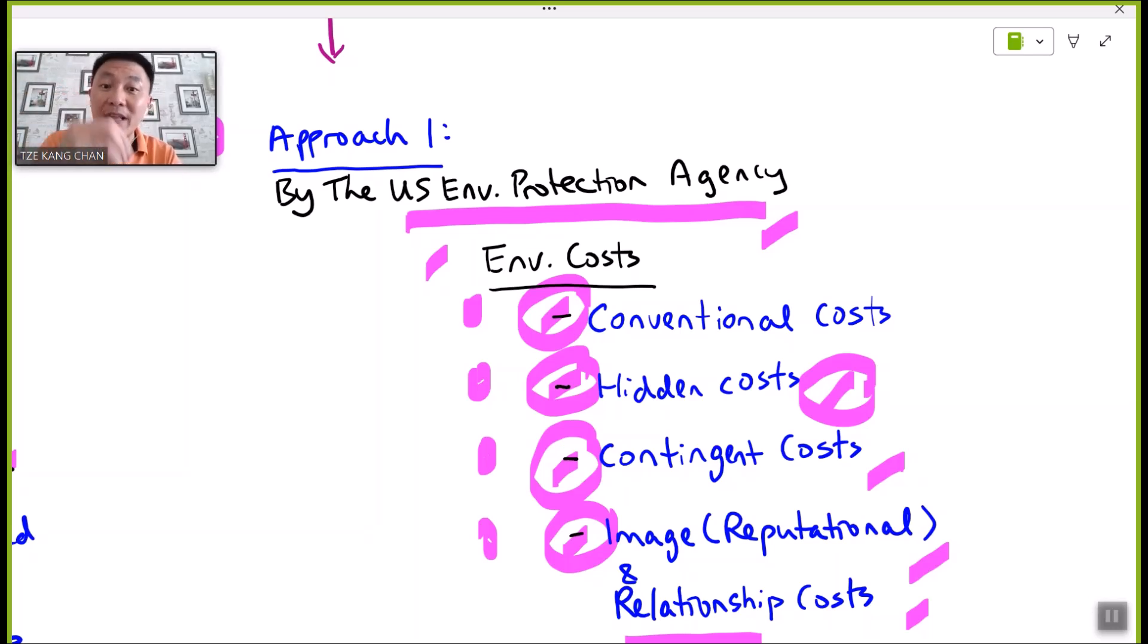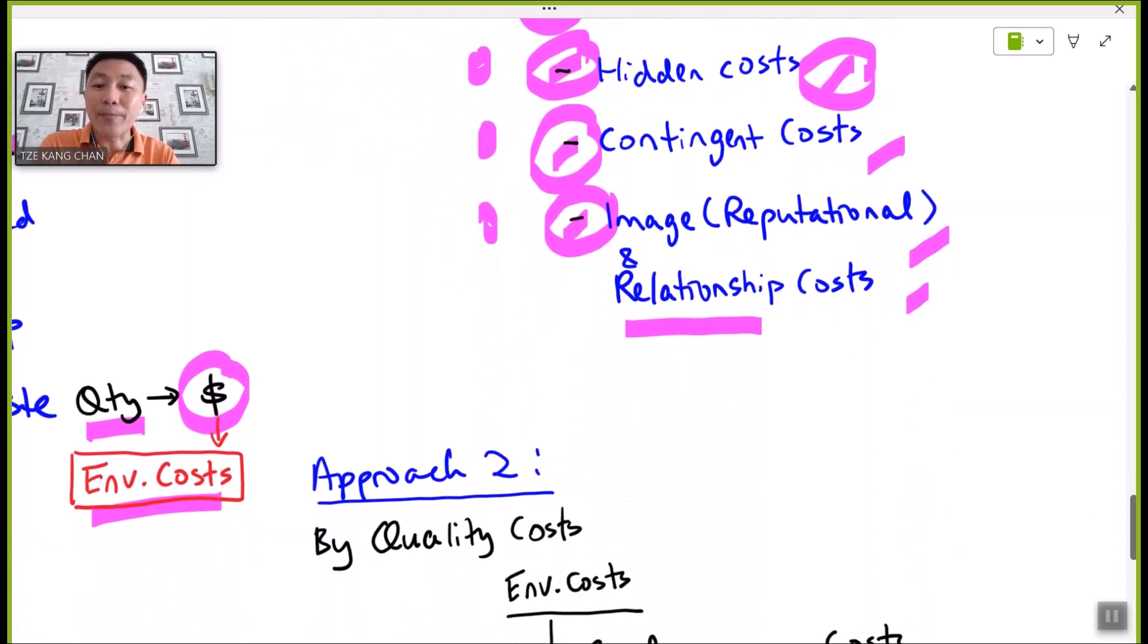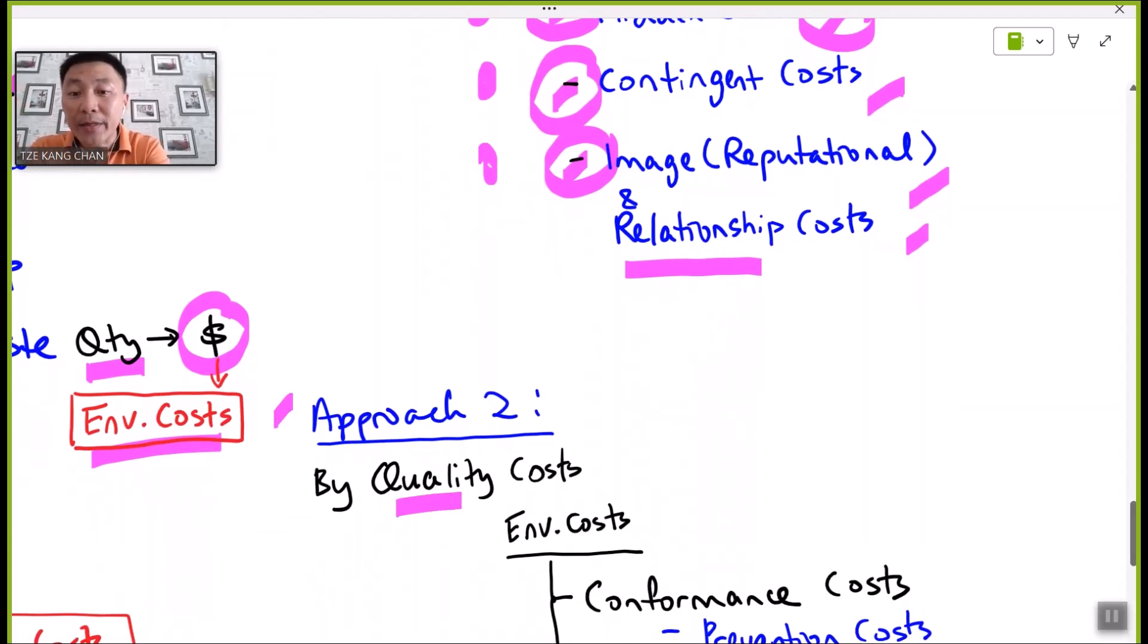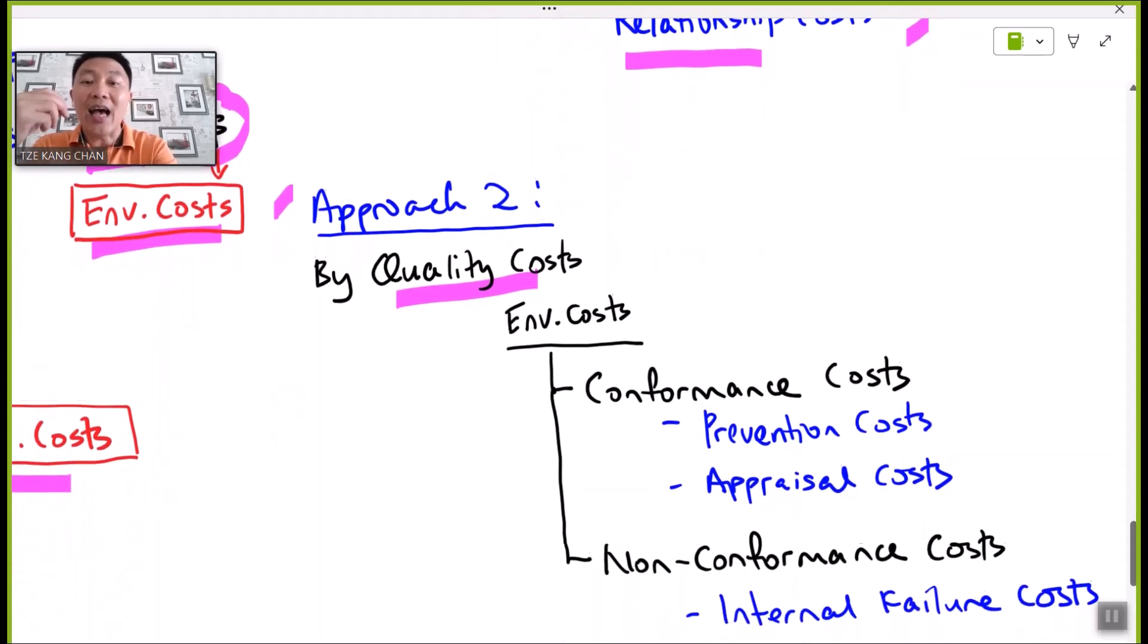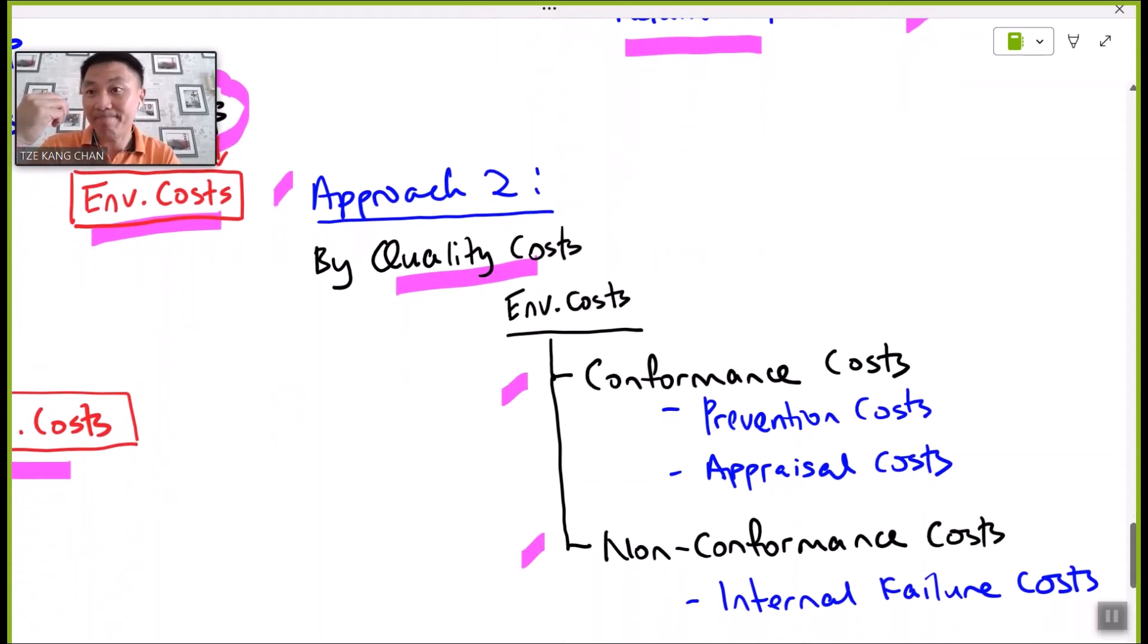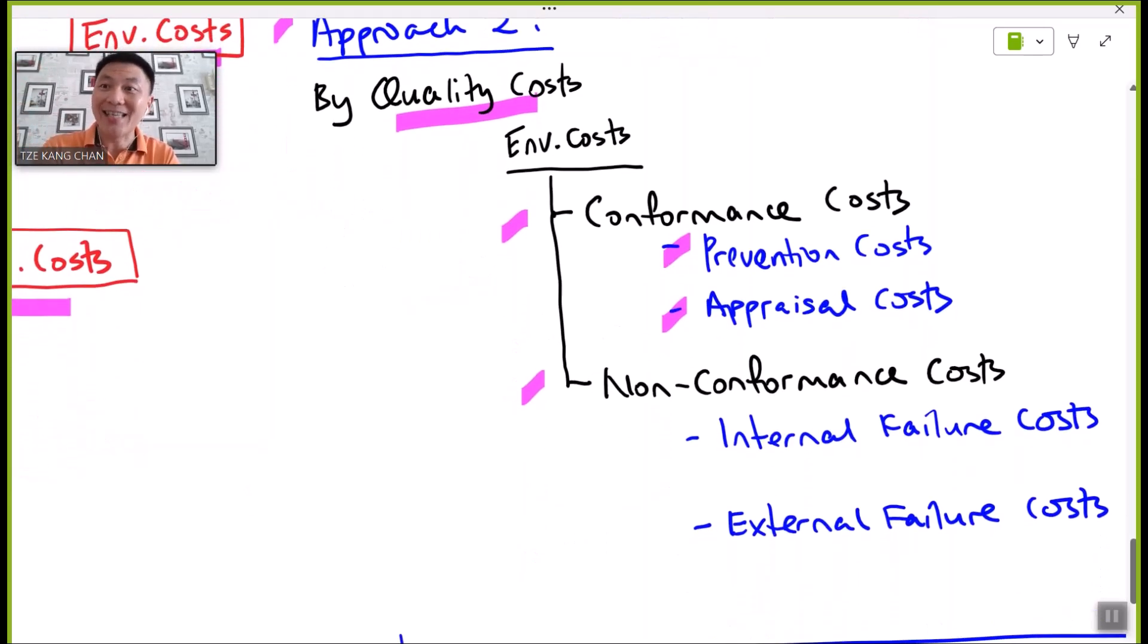Other than the four types of environmental costs as suggested by the agency, the second approach of analyzing such costs is similar to that of the quality cost analysis that you have learned in other parts of the syllabus. Under the quality cost analysis, there are two main categories: the conformance costs that are made up of prevention and appraisal, in other words detection costs; and non-conformance costs, another category of quality costs that are made up of internal and external failure costs.